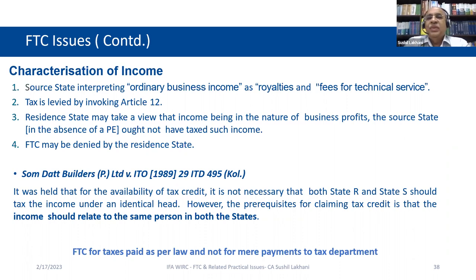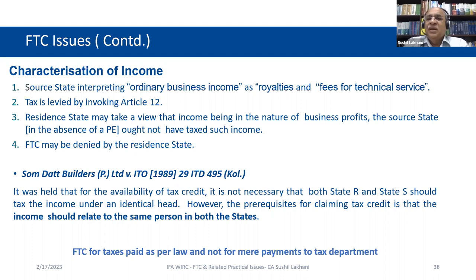The next issue is characterization of income. It routinely happens that the source country may characterize a particular income differently from the resident country. For example, India may characterize income as royalty or FTS while the source country may treat it as business income, and that happens even with Indian recipients.